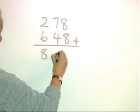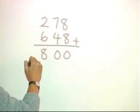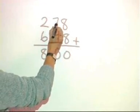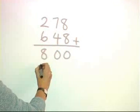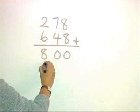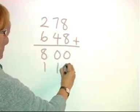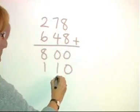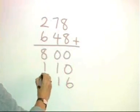200 and 600 gives us 800. Let's do the tens now. 70 and 40 adds together to get 110. 8 and 8 gives us 16.